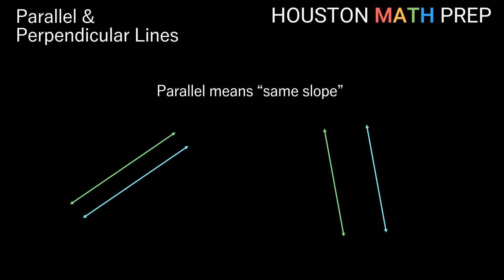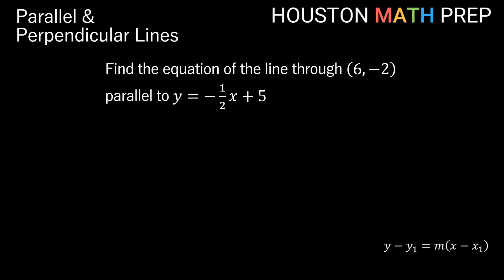So parallel lines means that our lines have the same slopes. When we're asked to find the equation of some line, instead of being given two points, we may just say it's parallel to some other line. Let's take a look at some examples. Here we want to find the equation of the line through the point (6, -2), and we want it to be parallel to the line y equals negative one half x plus 5. So parallel to this line means it has the same slope.